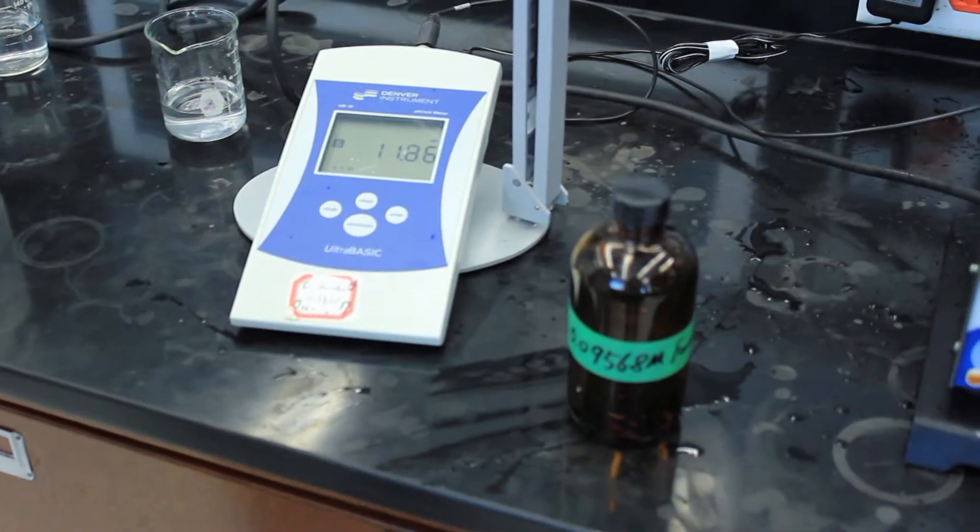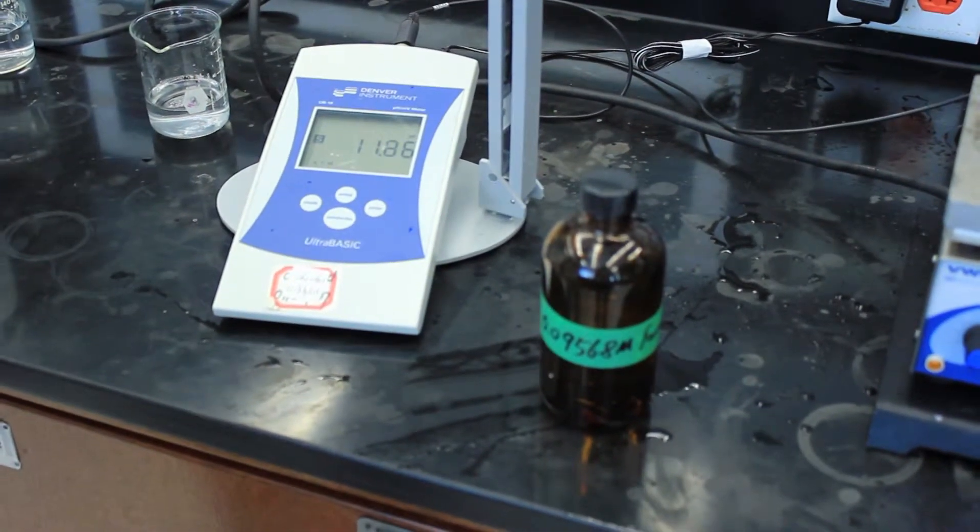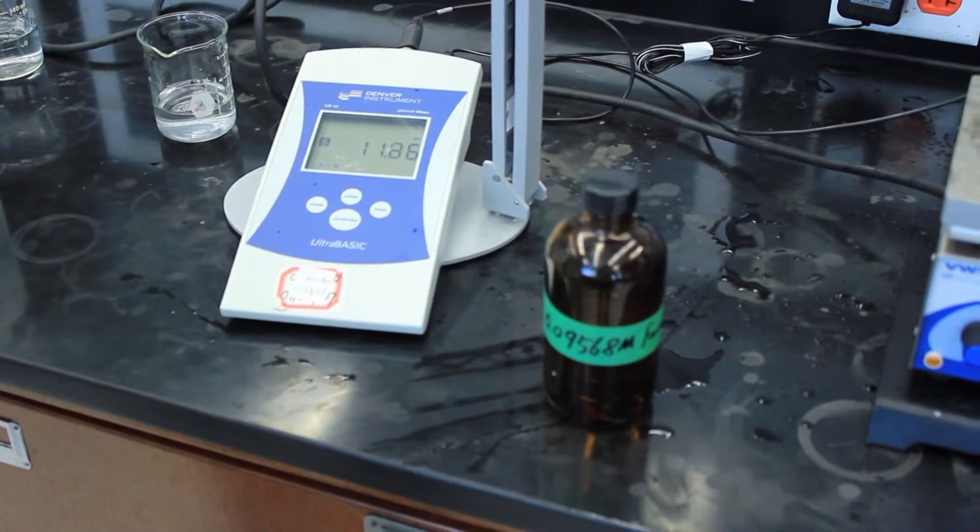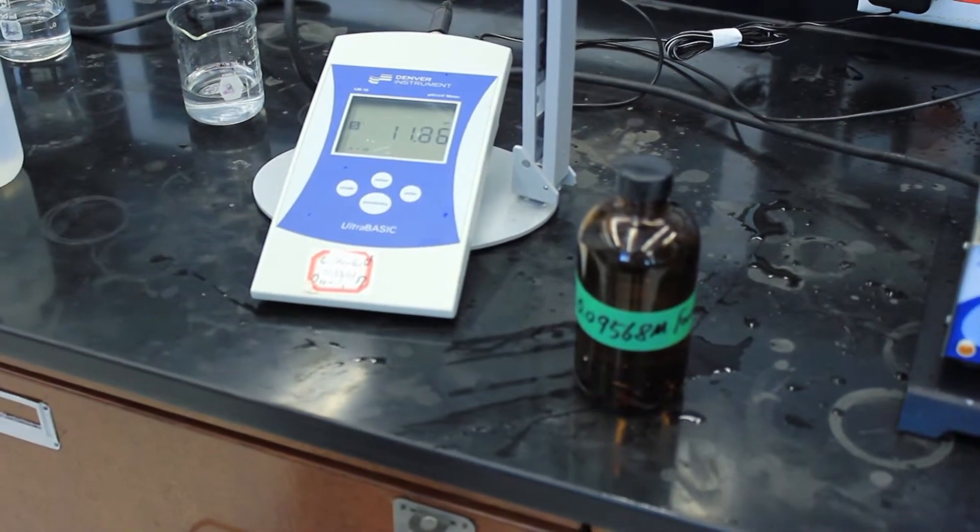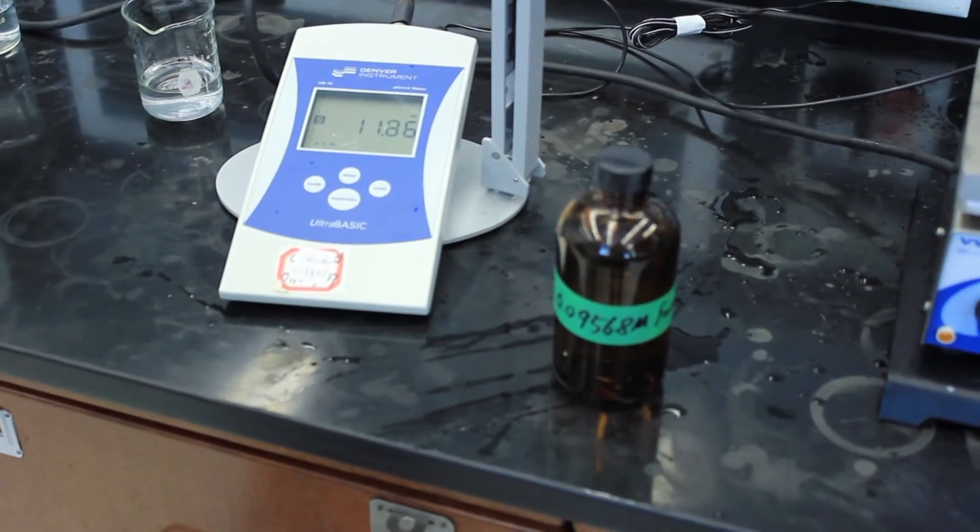For part 2 of the titration, instead of nitric acid, you're going to be using formic acid, which is a weak acid and will not dissociate completely. Repeat the procedure used for the nitric acid, but use formic acid instead.